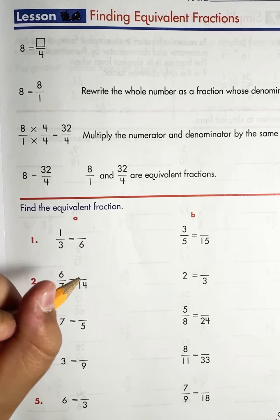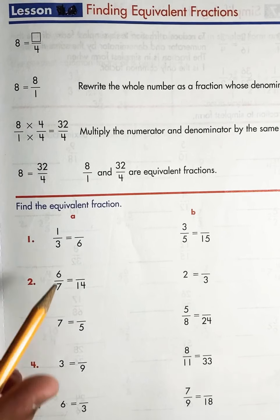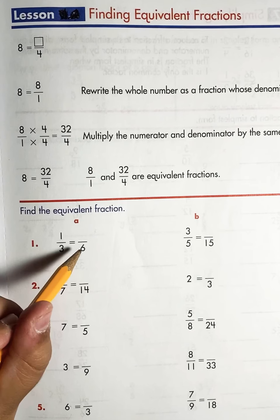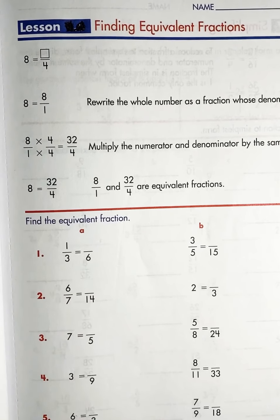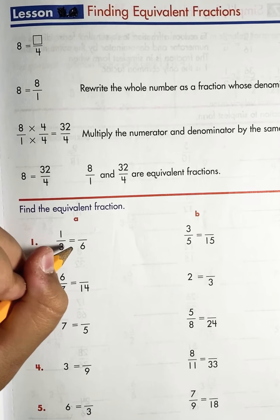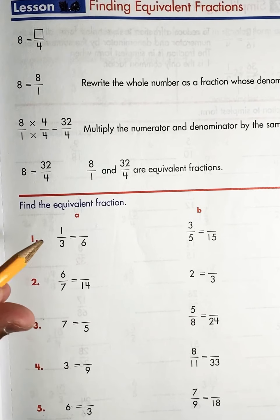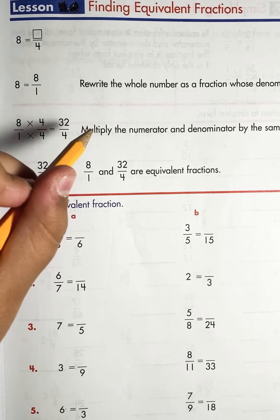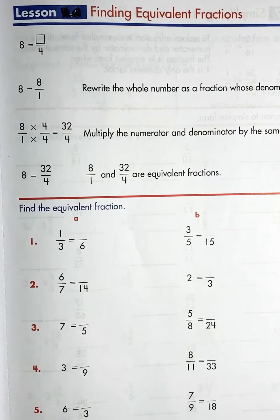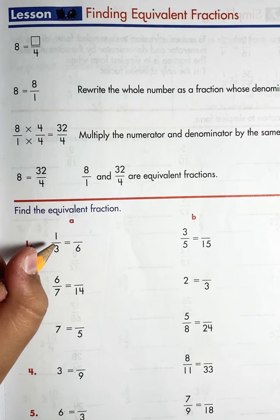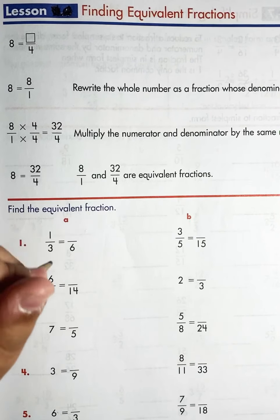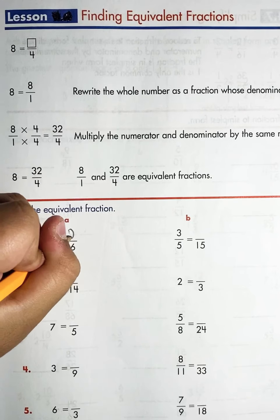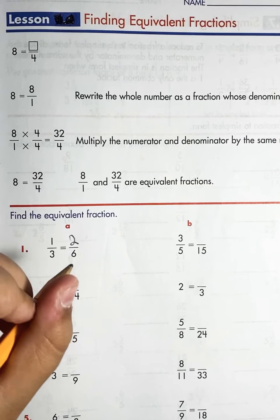One third equals blank sixth. So how many times does three go to six? Two times. So it's three times two is six. Now we have to do the same to the one as shown here. So now two times one. One times two is two. So one third is equivalent to two sixths.